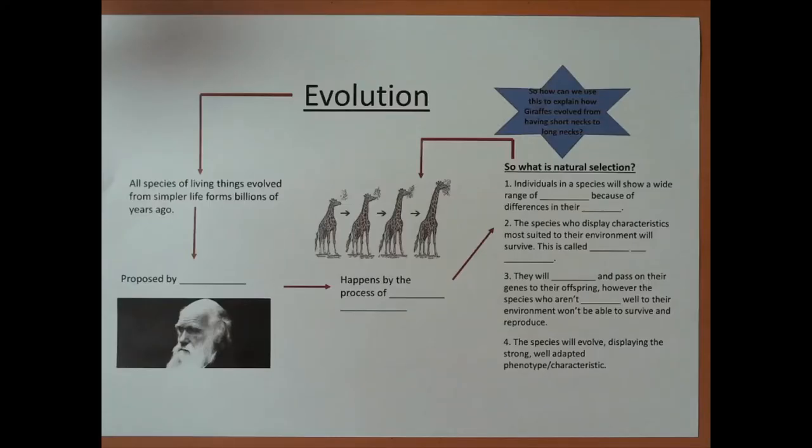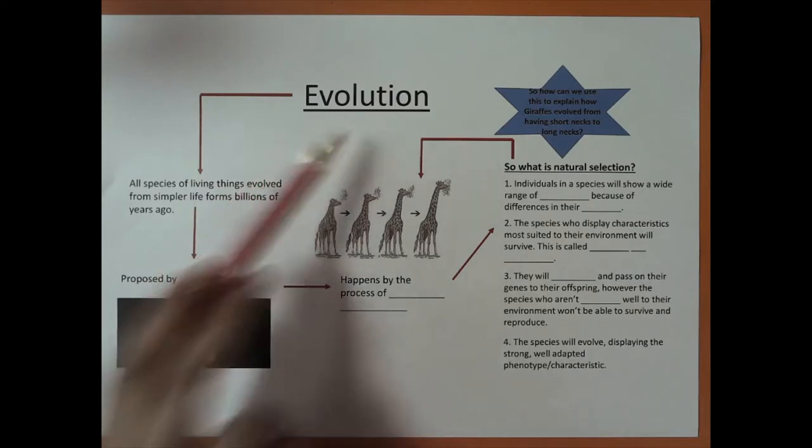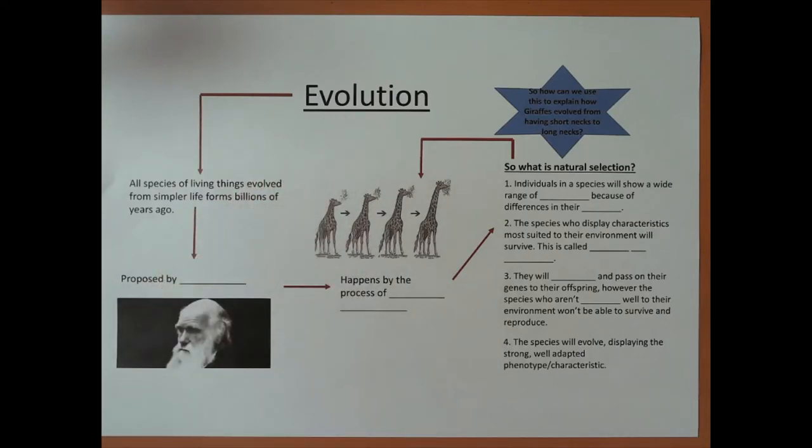Hi. In this video we are going to be talking about evolution. In a nutshell, the theory of evolution basically states that all species of living things evolved from simpler life forms billions of years ago.